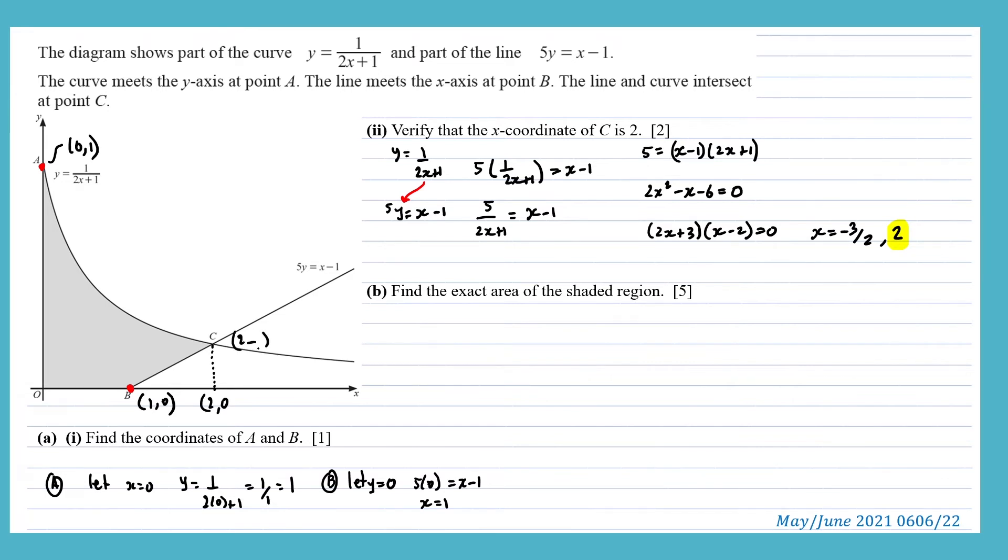And we do need the y coordinate. So let's do that. So using y equals 1 over 2x plus 1, we can substitute our 2 in. So y would be 1 over 2 times 2 is 4 plus 1 is 5. So this coordinate would be 2, 1 fifth.